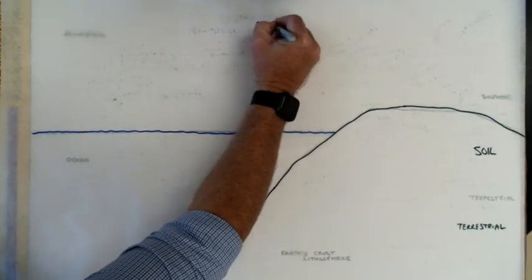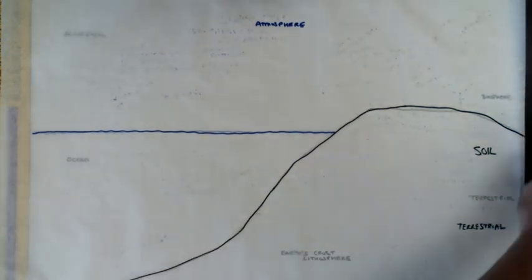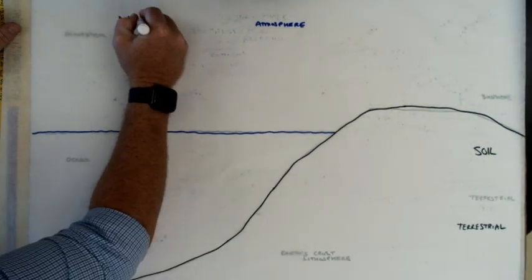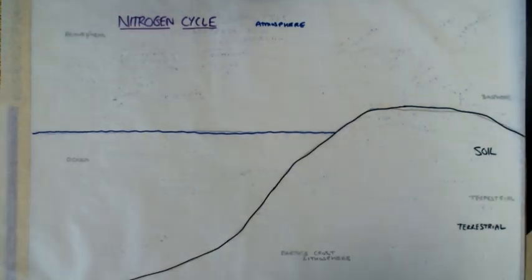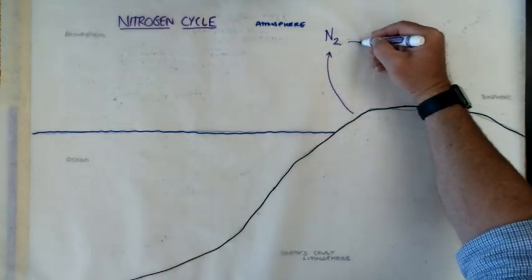The students undertake the biogeochemical cycles, and there are five in total: nitrogen, water cycle, the carbon cycle, sulfur, and phosphorus cycle. Now all play an important role in the flow and movement of nutrients.